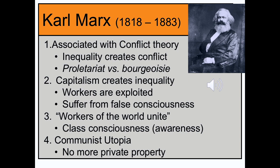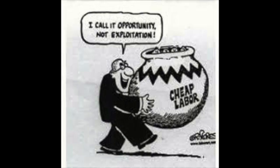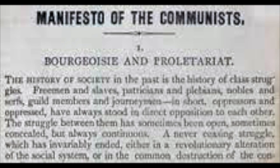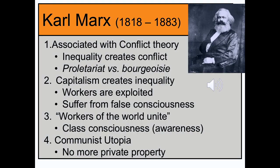He saw capitalism as a system that creates inequality. People were moving from the countryside to work in factories, and the conditions at the time were appalling. There were no labor laws, and there was no recourse if your hand got chopped off or if you lost a leg. So workers were exploited. For Marx, they suffered from false consciousness — meaning they didn't question their conditions and just accepted their oppression. In 1848 he wrote the Communist Manifesto, where he famously said, 'Workers of the world, unite.' He wanted unions to put pressure on factory owners so that workers were no longer exploited.